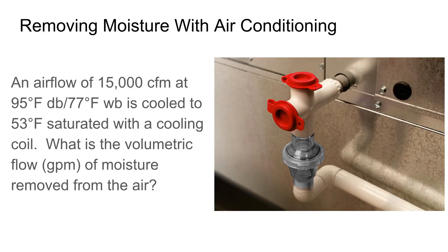Removing moisture with air conditioning. An airflow of 15,000 CFM at 95 degrees dry bulb, 77 degrees wet bulb, is cooled to 53 degrees saturated with a cooling coil. What is the volumetric flow in GPM of moisture removed from the air?